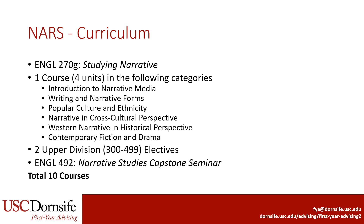Next, we have the curriculum for the Narrative Studies major. This interdisciplinary major requires a total of nine courses that can be taken in several departments. Majors are required to take English 270, Studying Narrative. They will also choose one course from a list of options including Introduction to Narrative Media, Writing and Narrative Forms, Popular Culture and Ethnicity, Narrative in Cross-Cultural Perspective, Western Narrative in Historical Perspective, and Contemporary Fiction and Drama. You will also have two additional upper division 300 or 400 level major electives from any of the departments that offer Narrative Studies courses. Finally, Narrative Studies students will take English 492 Narrative Studies Capstone Seminar in their senior year. For a full list of eligible courses, please check the English department's website under the Undergraduate tab or your STARS report.